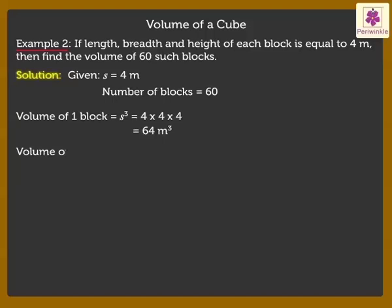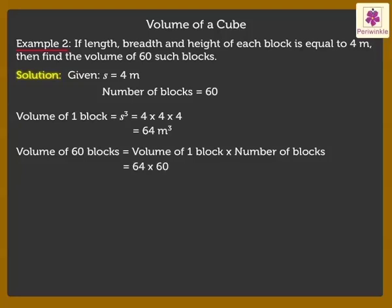Now, volume of 60 such blocks is equal to volume of one block into number of blocks, which is equal to 64 into 60, is equal to 3,840 cubic metres.